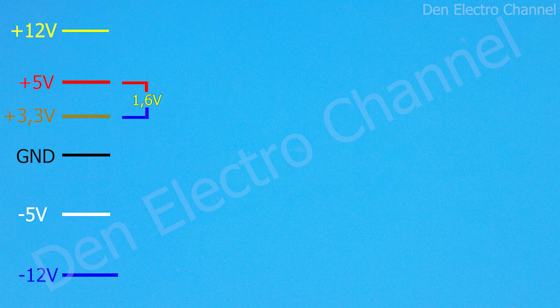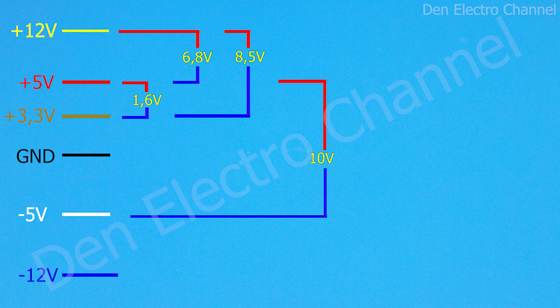But between the plus 5 and plus 12 terminals there are already more turns. Therefore, the voltage between them will be higher. Here it is almost 7 volts. Between the plus 12 and plus 3 volts terminals there are about 8.5 volts. Well, you can see all the other voltages on your screens.